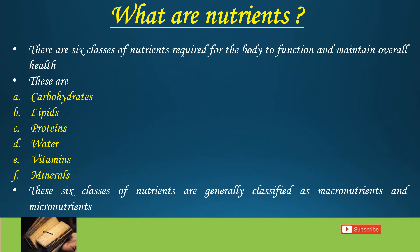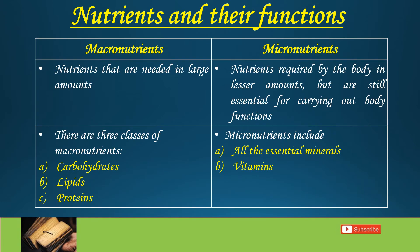These six classes of nutrients are generally classified as macronutrients and micronutrients. Macronutrients are the nutrients that are required in large quantities, and there are three classes of macronutrients: carbohydrates, lipids, and proteins. Whereas micronutrients are required by the body in lesser amounts, but are still essential for carrying out body functions. Micronutrients include all the essential minerals and vitamins.